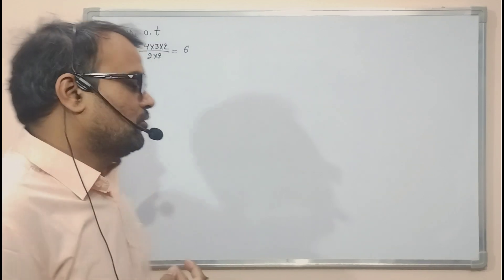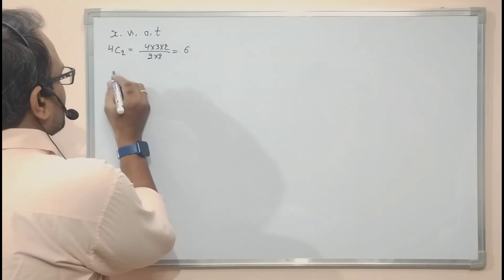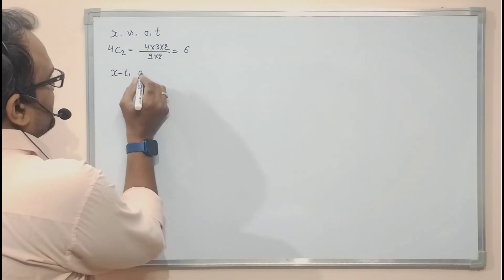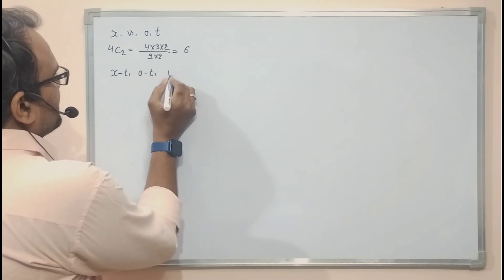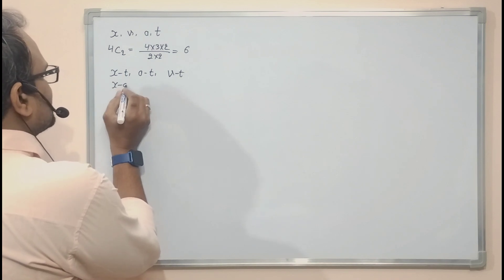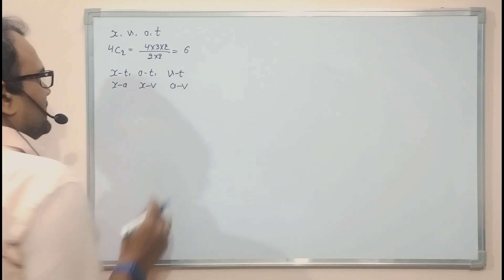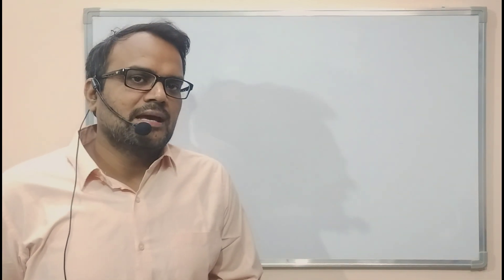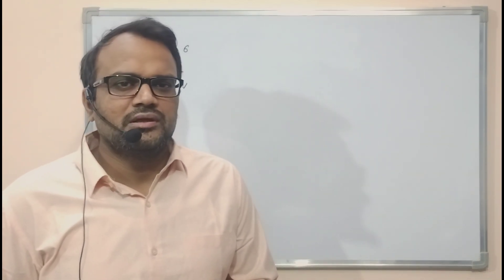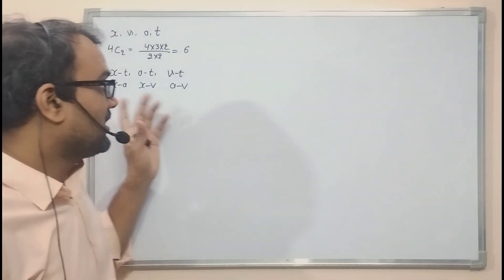The six relations are: x-t, a-t, v-t, x-a, x-v, and a-v. We are going to understand each and every relation in detail with the help of examples.